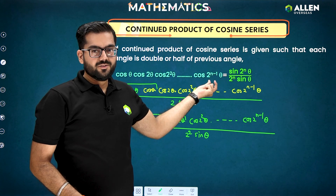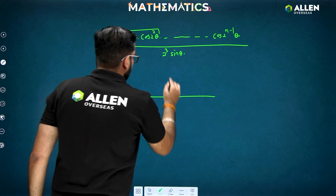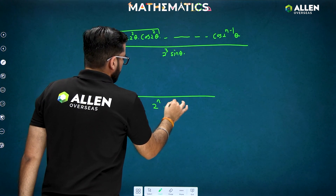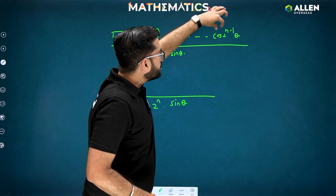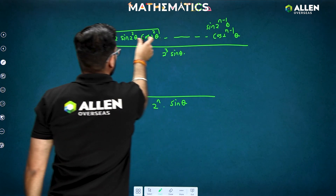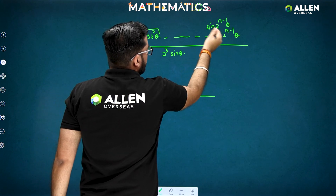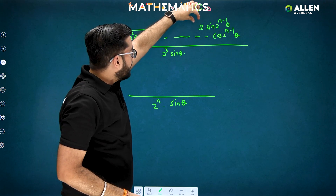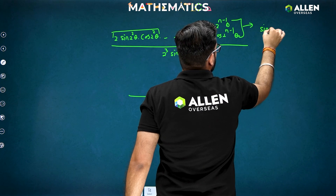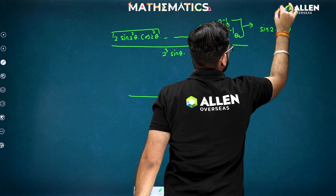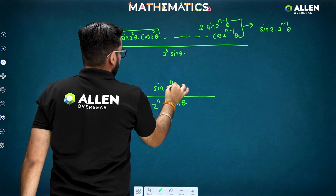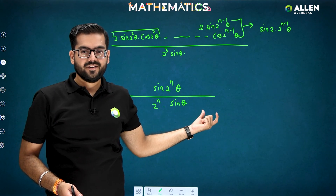So the number of terms is n, and we need to multiply by 2 a total of n times — that is why we get 2^n in the denominator with sin θ. In the numerator, for the last term cos(2^(n−1))θ, we multiply again to get sin(2^(n−1))θ according to the same pattern. Applying 2 sin a cos a one final time gives sin(2^n · θ). So the complete result is sin(2^n θ) / (2^n sin θ). This is the formula you need to remember for this type of pattern.